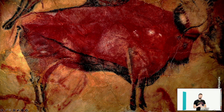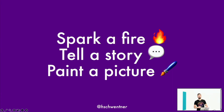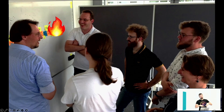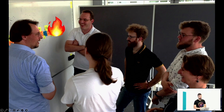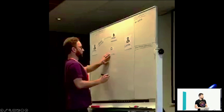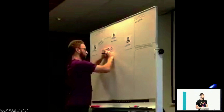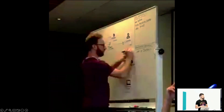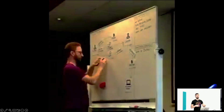16,000 years later it's still about the same things. We still want to spark a fire, tell a story, and paint a picture. We are still fascinated by monoliths, although we do not understand them. Of course, the fire is not sparked in a dark and damp cave anymore — it's usually sparked in a meeting room, and we gather around not a real fire but around a whiteboard or a modeling space. The story isn't told by hunters anymore; the story is told by our users, by our domain experts. The picture is painted not with animal blood and coal, but with markers on a whiteboard. Here you can see Stefan doing a modeling session with Domain Storytelling.